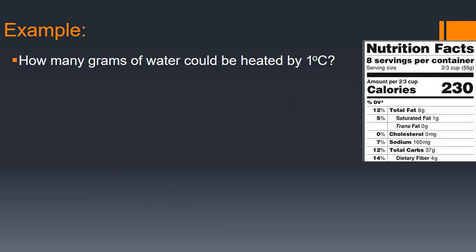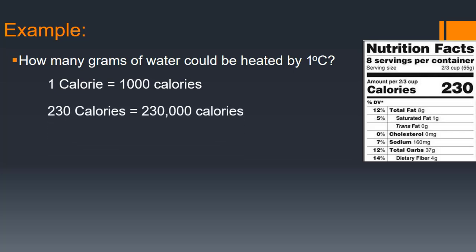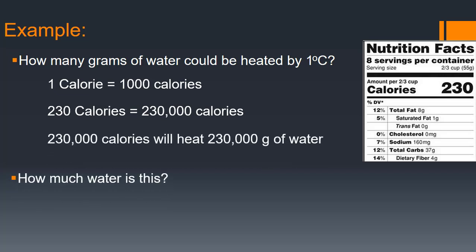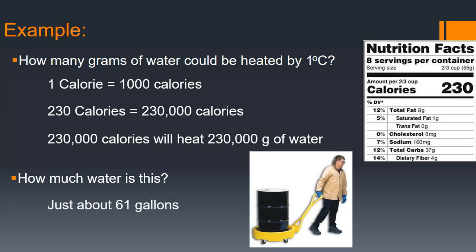Let's take our big cookie with the 230 calories. How many grams of water could be heated by one degree Celsius with this many calories? We know that one capital C calorie is actually 1,000 regular calories, so our cookie really has 230,000 calories. If one calorie raises the temperature of one gram of water one degree Celsius, and we have 230,000 of them, then 230,000 calories will heat 230,000 grams of water. Your typical water bottle has about 260 grams of water in it, so that's about 1,000 water bottles, or about 61 gallons of water.